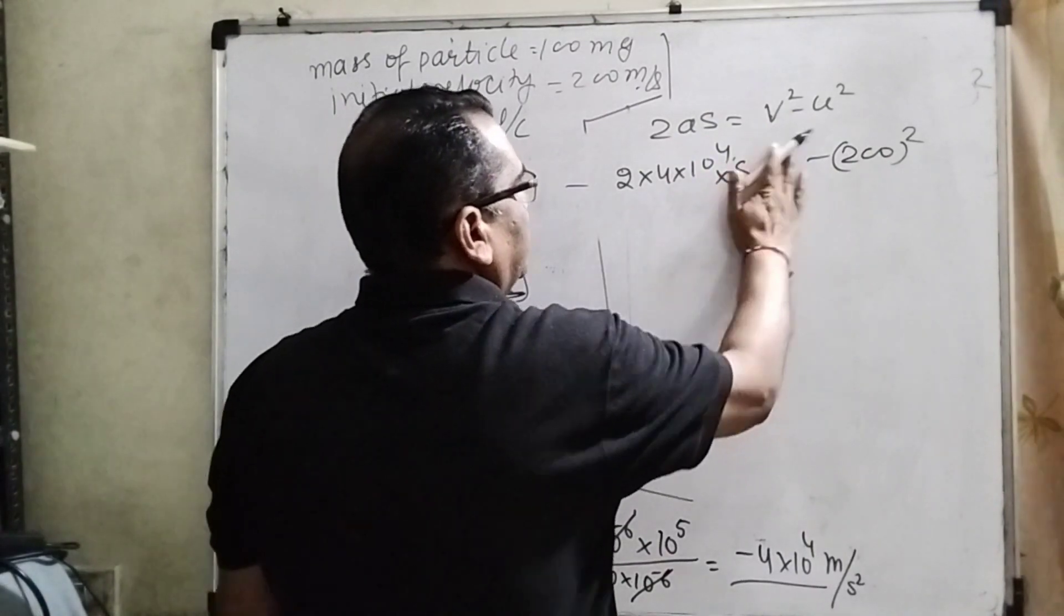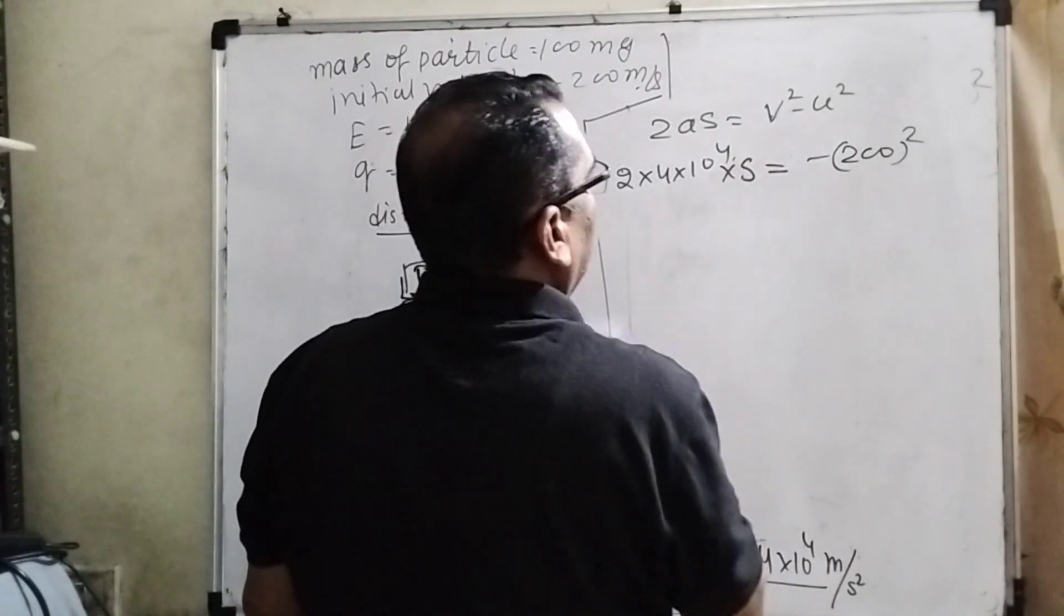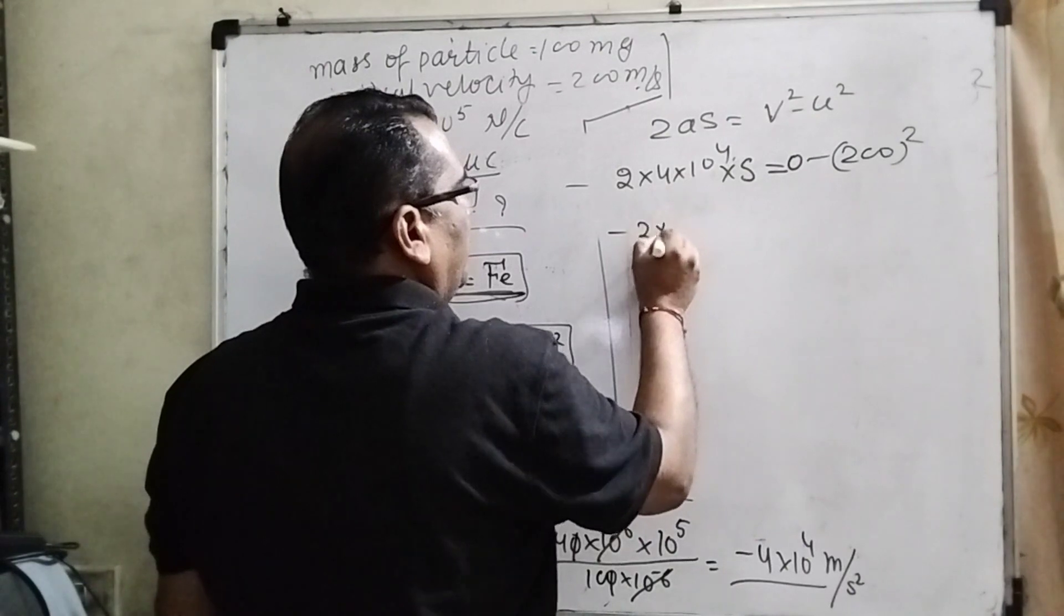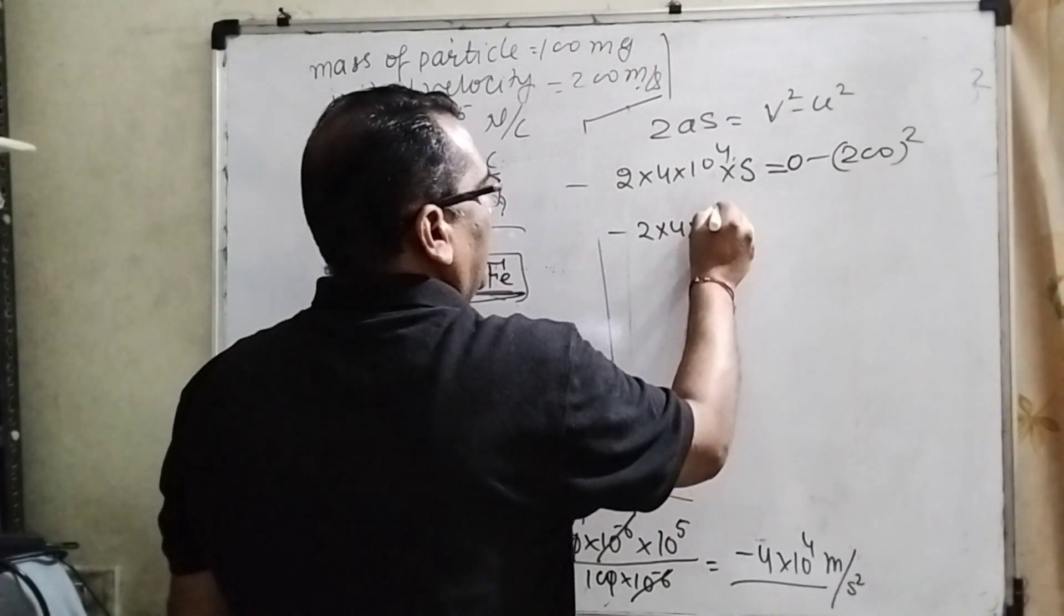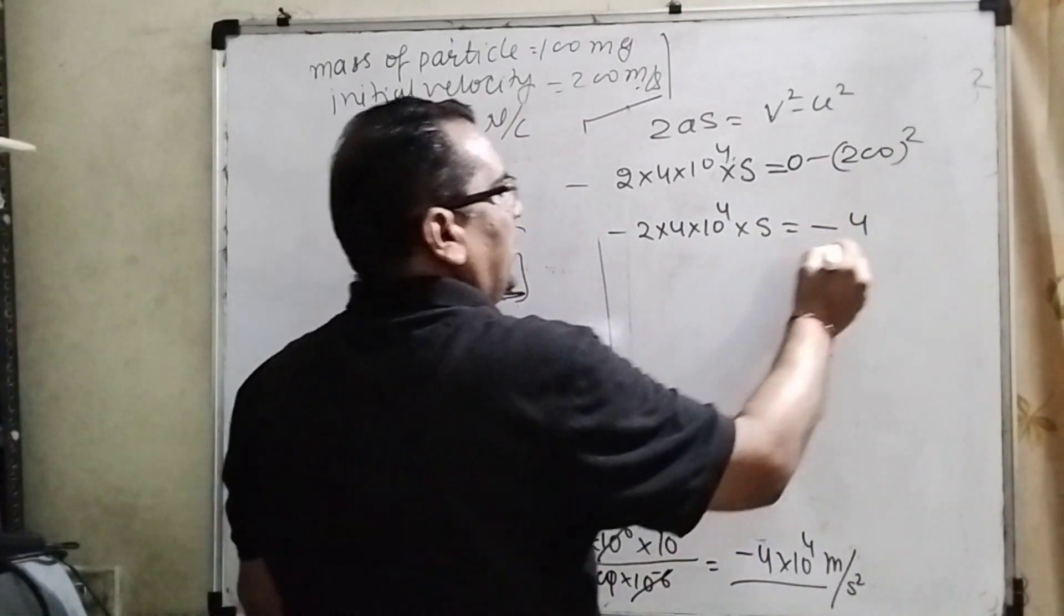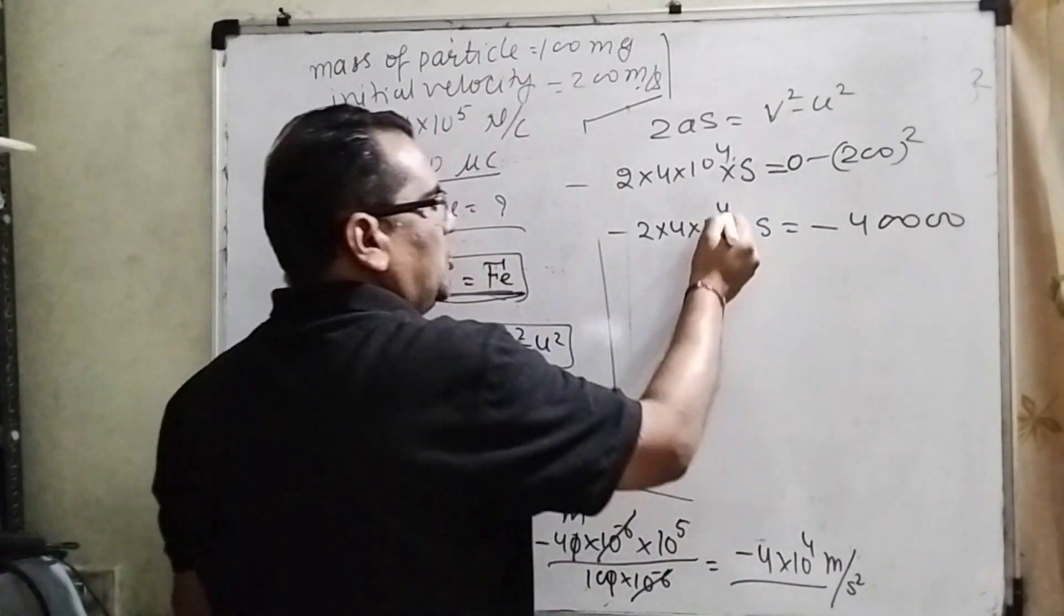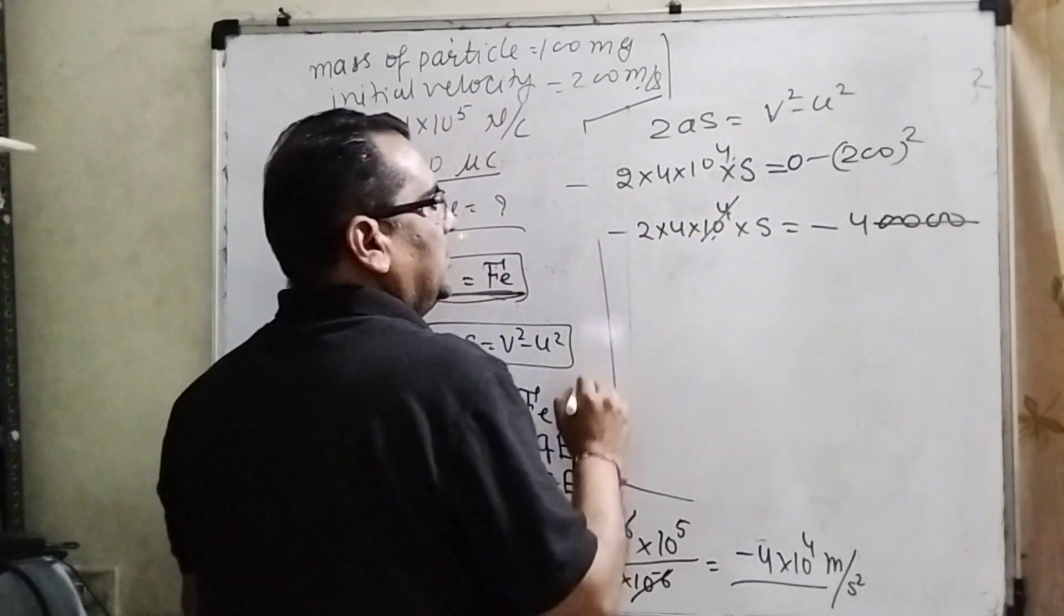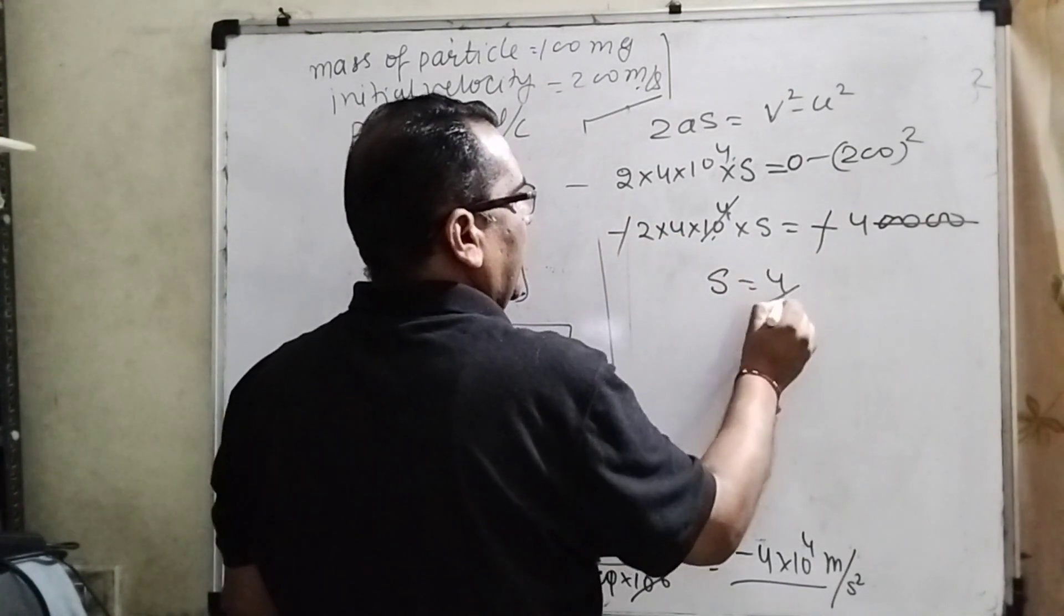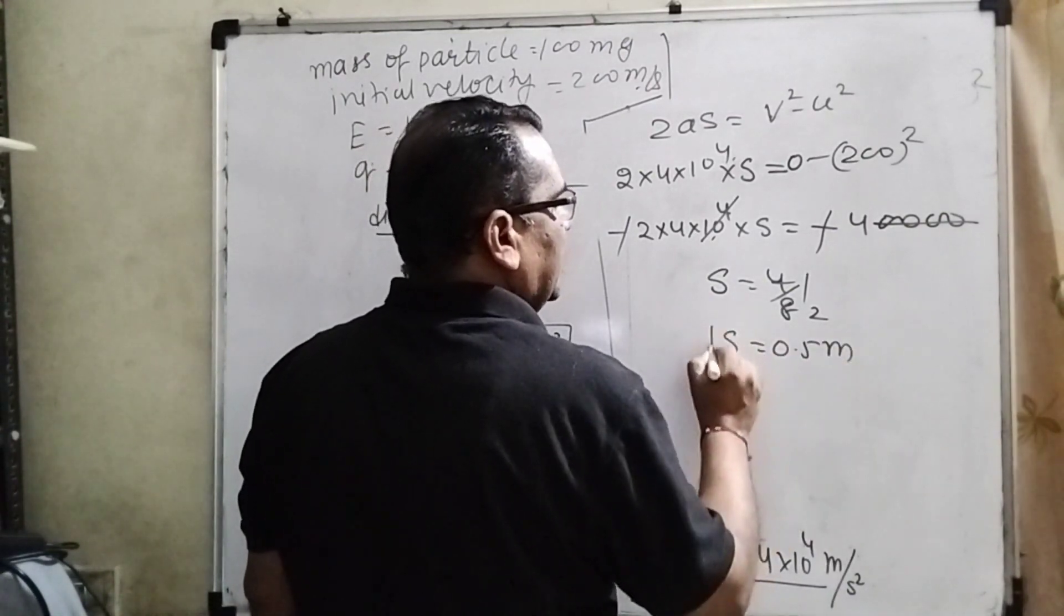So, -2×4×10^4×s equals -200². The 4 cancels out, and the minus signs cancel out. s equals 4/8, which means 0.5 meter is the correct answer.